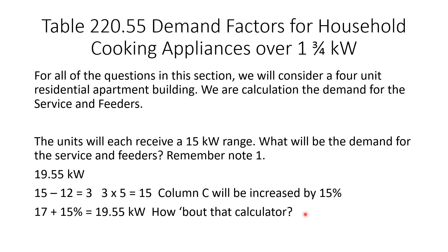17 plus 15% gives us 19.55 kilowatts. On your calculator: clear it out, enter 17, hit plus, enter 15, hit the percent key — that should give you 19.55. Some calculators require you to hit the percent key and then the equal sign, so know your calculator. You should practice with the actual calculator you're bringing to the exam.